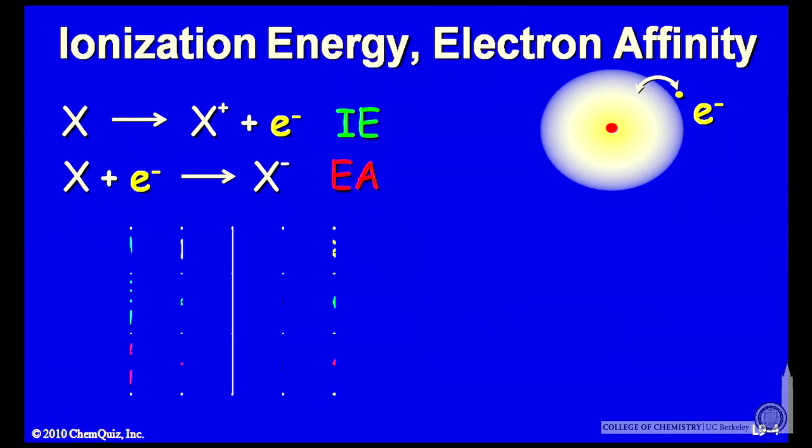So let's look at these properties more carefully. Here's some elements on the periodic table. Sodium, potassium, rubidium, that's going down a column of the periodic table. And chlorine, bromine, iodine going down a column of the periodic table.